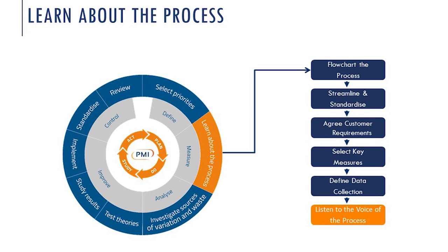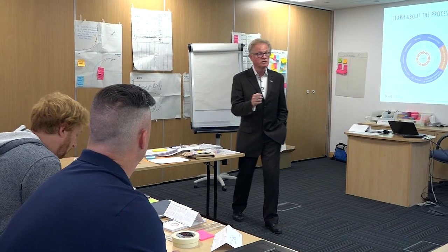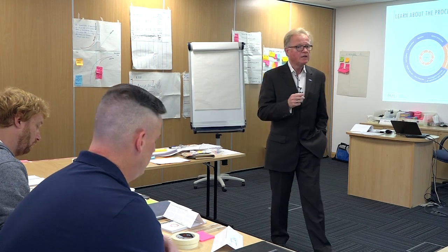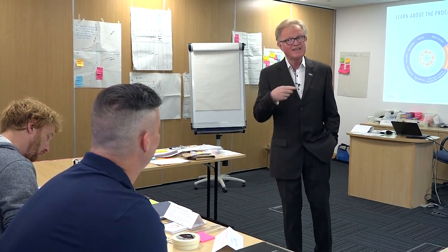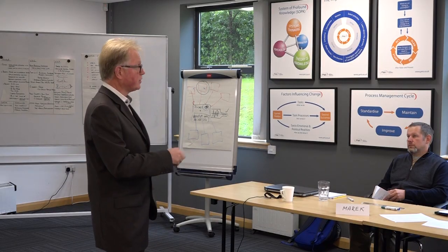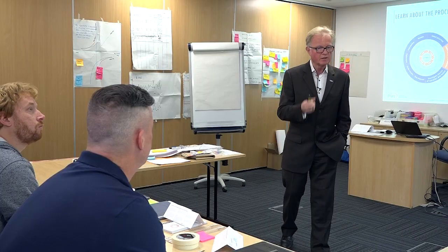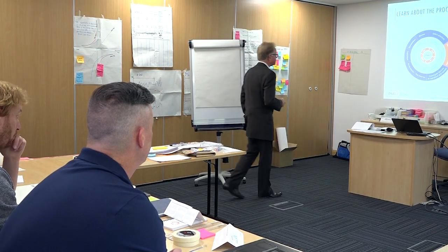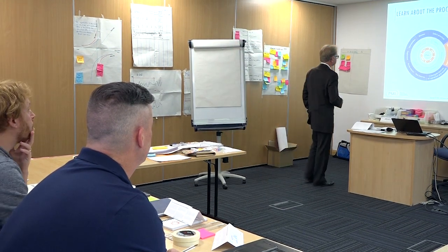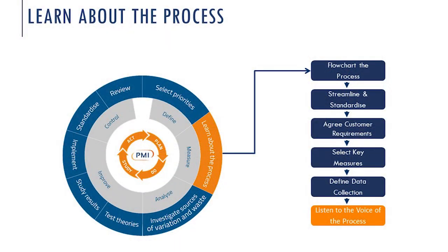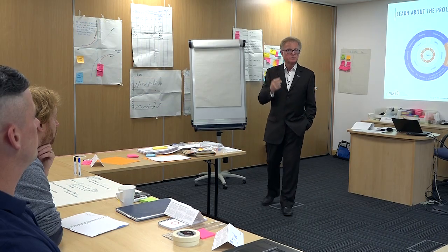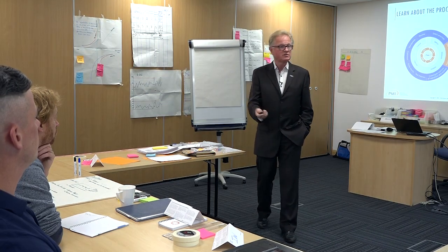A value stream map is constructed as part of learning about the process. It is purely a device that enables us to see and understand the process better. When we come to learn to see what the process is doing, a value stream map is a way of demonstrating that, much as a flowchart would be. It's part of our 'learn about the process' element, and it's a deeply embedded element of listening to the voice of the process — learning to see what the process is trying to tell us.